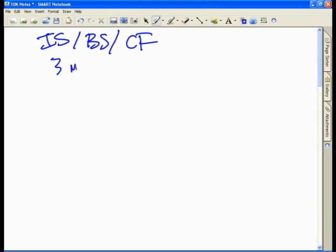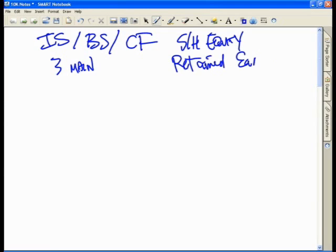We've got the income statement, the balance sheet, and the cash flow. Those are three main financial statements. However, the fourth financial statement is the statement of shareholders' equity, sometimes commonly known as the statement of retained earnings. Those are the four major financial statements.